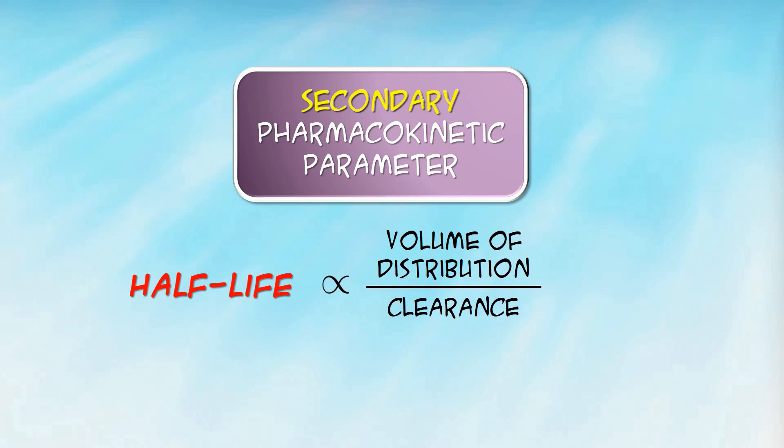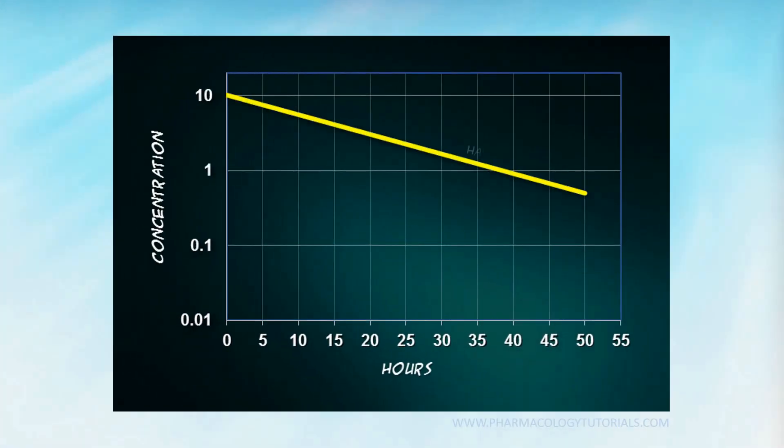Let me show you a series of graphs so that you can appreciate this better. Let us use as an example a drug with a 12 hours half-life. Now here is what happens to the half-life if you half the clearance. The half-life increases as expected. And if you double the clearance, the half-life predictably decreases.